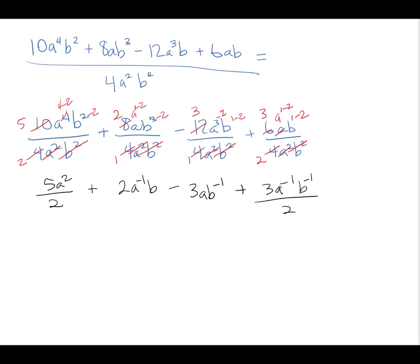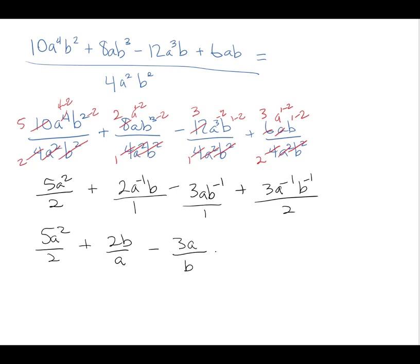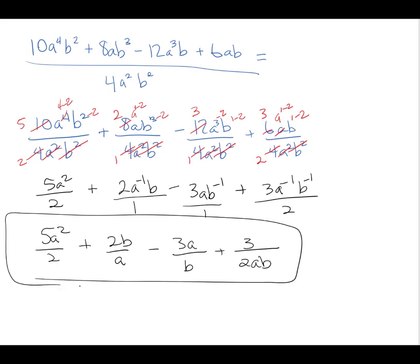I'm not allowed to leave exponents in negative form, so any negative exponents in the numerator I'm going to bring down to the denominator to become positive. That gives me: 5a²/2 + 2b/a - 3a/b + 3/(2ab). All exponents are positive, everything's been reduced — there is my answer.